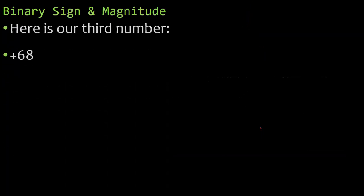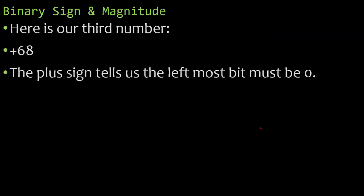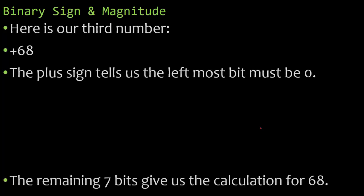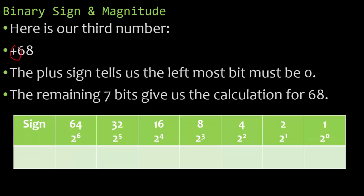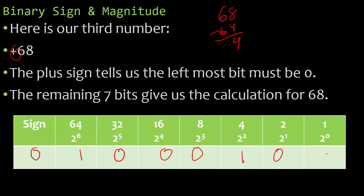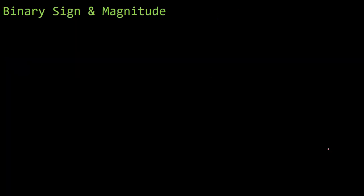Let's take a look at another example. How about positive 68? The plus sign tells us the leftmost bit must be a zero. The remaining seven bits give us a calculation for 68. So I have a positive sign. This becomes a zero because I'm dealing with a positive number. And then I need to get to 68. Will 64 help me get to 68? It sure will. And then all I'm left looking for is the number four. Here's my four. And then my binary sign and magnitude binary number is 01000100. That will give me positive 68.